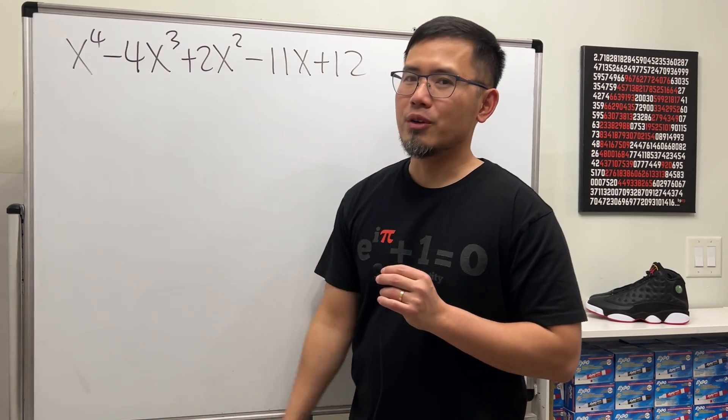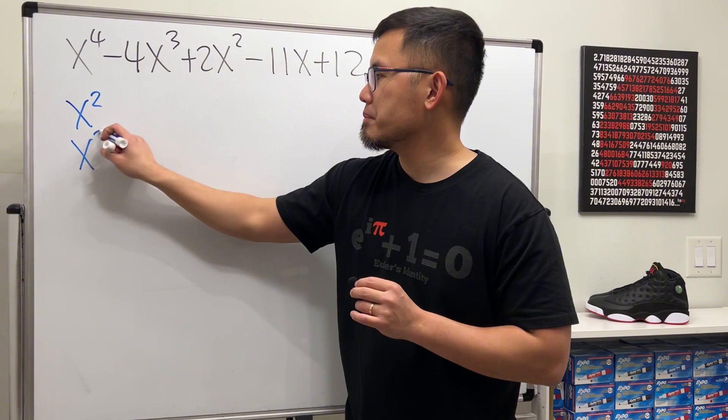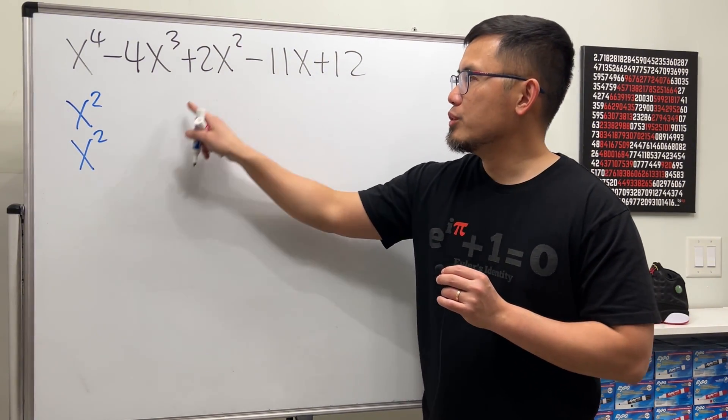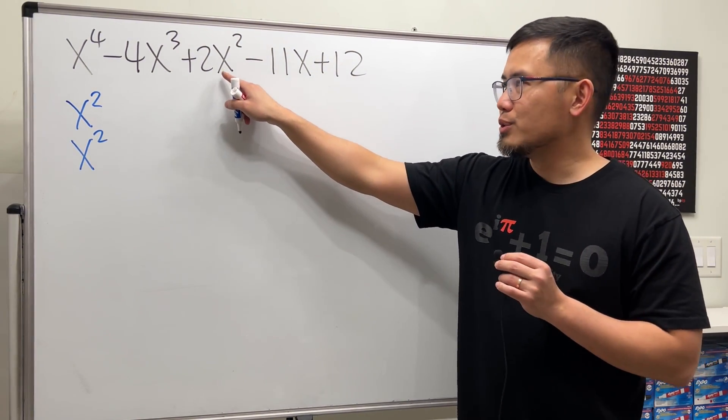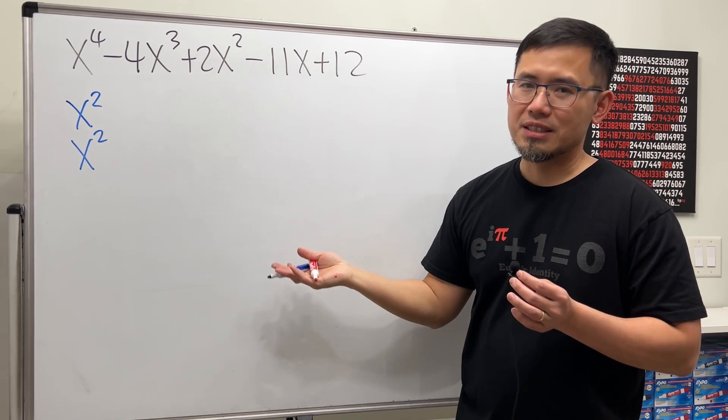Here, look at x to the fourth power first. Break it down as x squared times x squared. Good. Then, move to the middle term here. But, do not just look at 2x to the second power and say we need 2x and x. In fact, there's more to that.